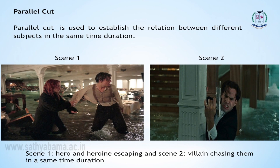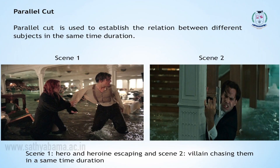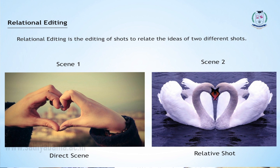Next is parallel editing or parallel cut. Parallel editing is used to establish the relationship between two different subjects. For example, in a chasing scene, the villain chases the hero — the hero runs with the heroine while in the opposite direction the villain and friends chase them. Two different scenes travel at the same time; this is called a parallel cut. Relational editing is the editing of shots to relate the idea of two different shots, conveying one meaning through different shots.